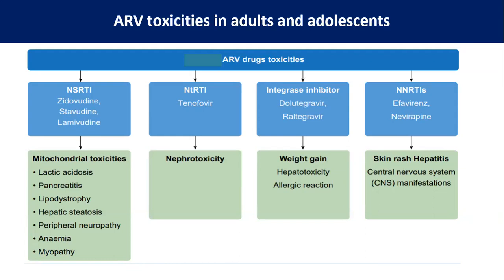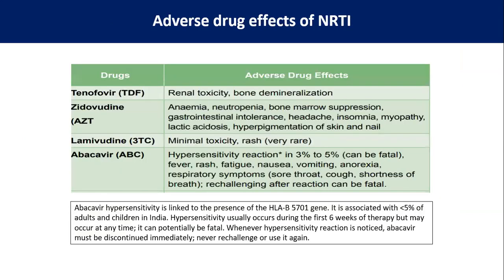The single NtRTI member, tenofovir, gives rise to nephrotoxicity and bone demineralization. For integrase inhibitors, there are two candidates: dolutegravir and raltegravir, and both produce similar side effects, but the frequency is much less with dolutegravir. For NNRTIs — efavirenz and nevirapine — both can produce skin rash and hepatitis; however, the frequency of hepatitis and skin rash is much higher with nevirapine than with efavirenz. Efavirenz has a unique side effect: neuropsychiatric manifestations.